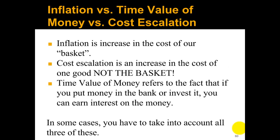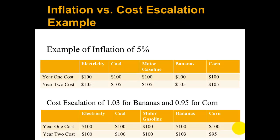There's one other caveat: inflation is the increase in the cost of a basket of goods, and cost escalation is an increase in the cost of one particular good, not the basket. For example, with five percent inflation, a year-one basket where electricity, coal, motor gasoline, bananas, and corn each cost one hundred dollars would result in everything rising to one hundred and five dollars in year two, since the whole basket rises by five percent.